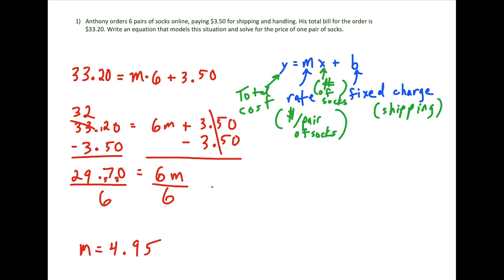So now we just have to interpret this. M represents the rate, which is the dollar amount for one pair of socks. So this tells us that the price of one pair of socks is $4.95.